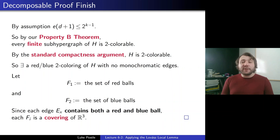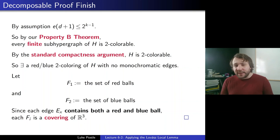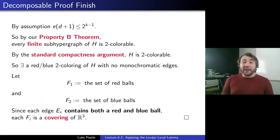That shows off a nice robust use of the Local Lemma in a geometric problem. That concludes our lecture for today. We applied the Local Lemma to property B, to multicolored sets via compactness, to Ramsey theory including off-diagonal Ramsey with the general Local Lemma, and to geometry where we reduced to a hypergraph problem and used compactness again to decompose coverings. That's all for today — until next time, see you then!